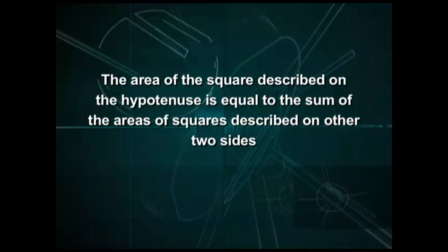The area of the square described on the hypotenuse is equal to the sum of the areas of the squares described on other two sides. Thank you.